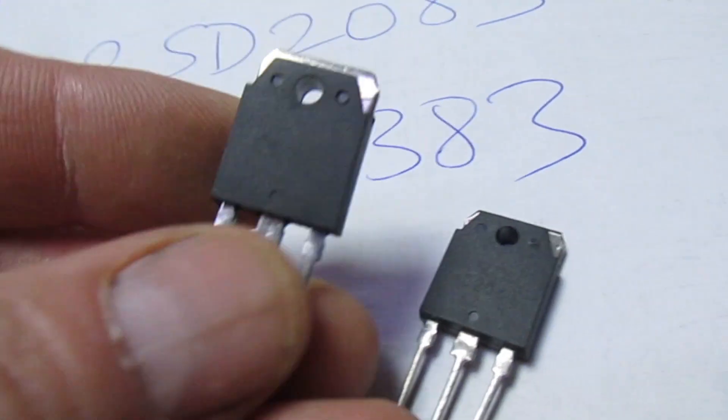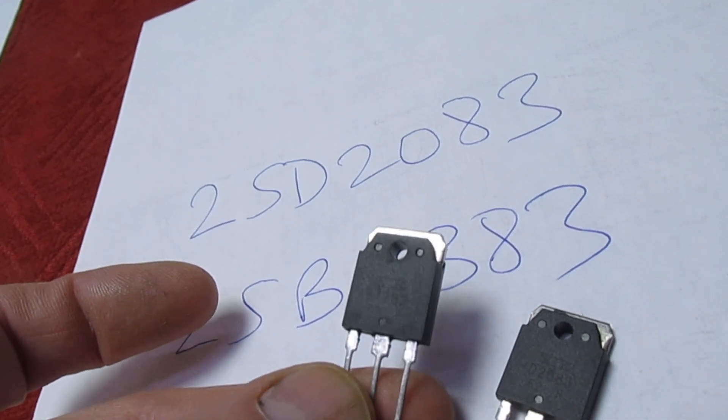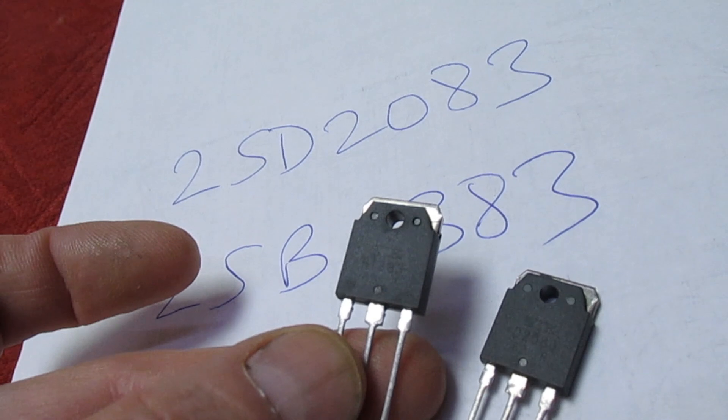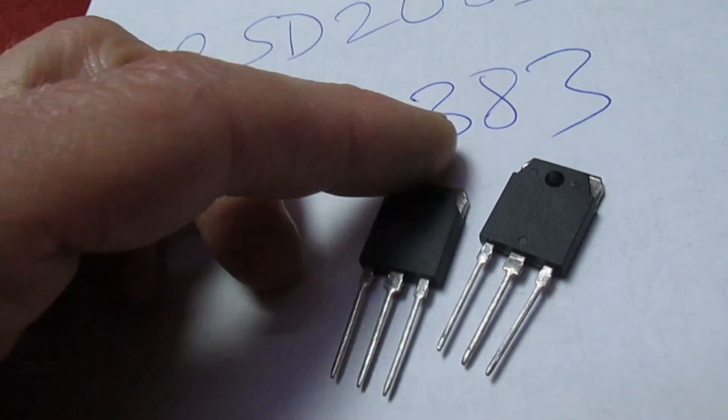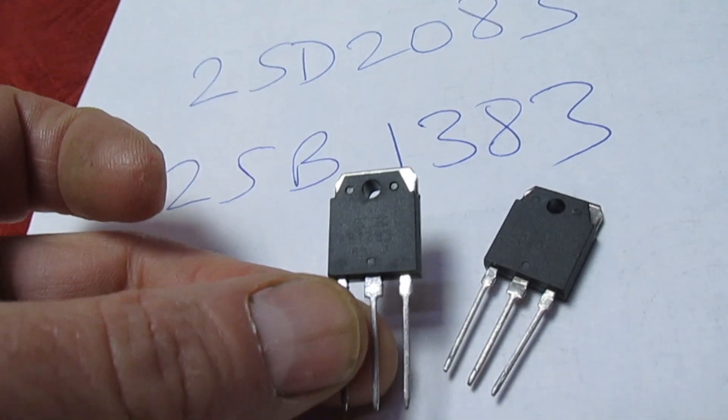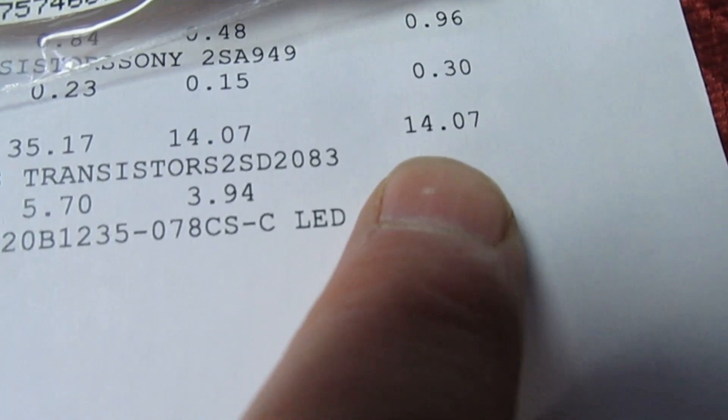As you can see they don't look like they've been repainted or sanded down. They actually look like the genuine part, until you compare them with a genuine part. You can buy a pair of these on the internet for a couple of pounds. I've just paid 14 pounds and 7 pence for a genuine pair.